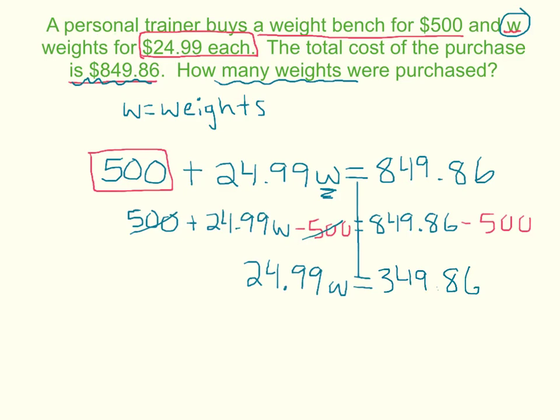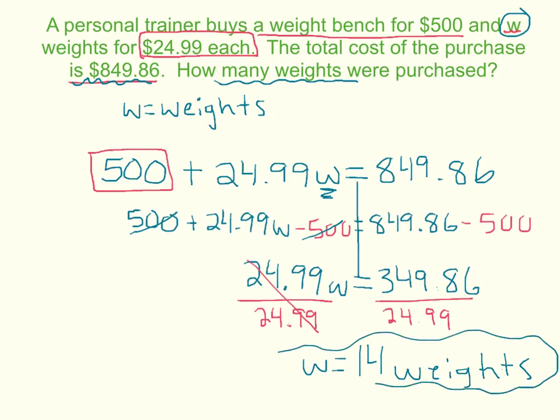and then that's equal to $349.86. And our next step, divide both sides by the $24.99. And you should get that w equals 14, and we're solving for the number of weights. And then you can always plug this back in and check.